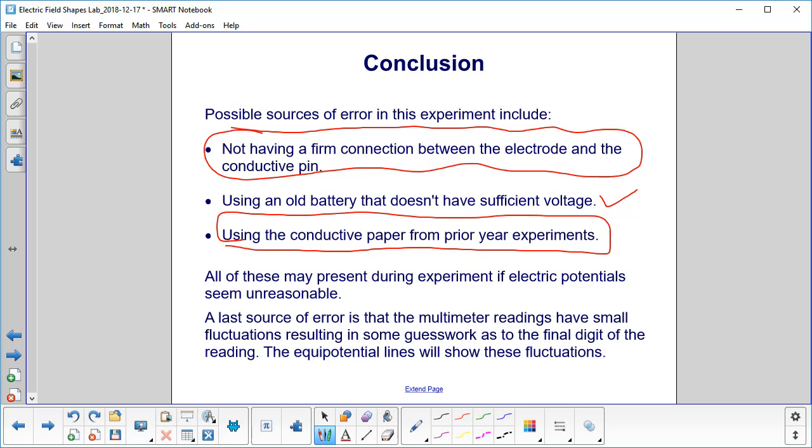All of these may be present if you find that your electric potentials don't seem to make sense. A last source of error is that the multimeter readings have small fluctuations, so you have to do some guesswork as to the final digit of the reading. The equipotential lines can show these fluctuations, but that shouldn't have a big effect on you.